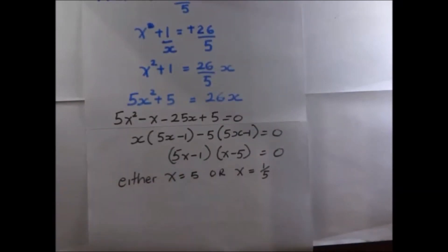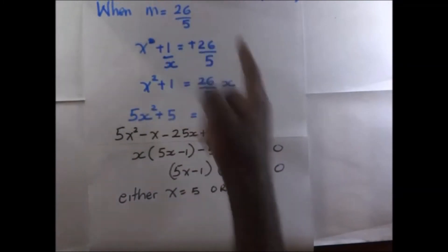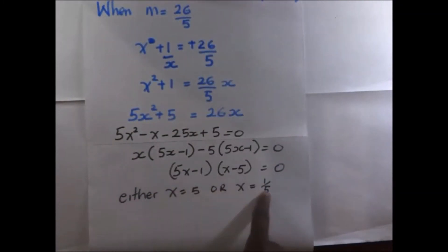So when the value of M is 26 over 5, we get our value of x as either 5 or a fifth. So it means for us,